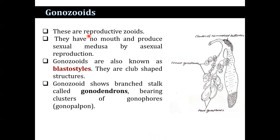Gonozooids are the reproductive zooids. They have no mouth and produce sexual medusae by asexual reproduction. Gonozooids are also known as blastostyles. They are club-shaped structures. Gonozooid branches topped with structures known as gonodendrons bear clusters of gonophores, also known as gonopalpones.